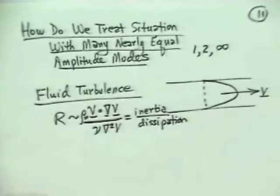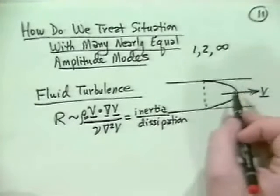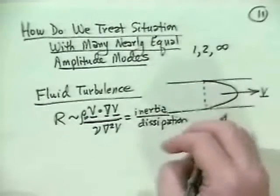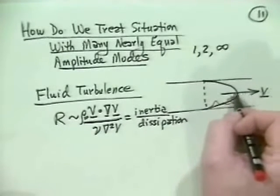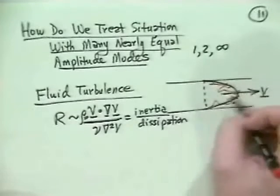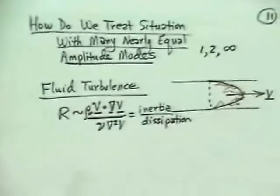Anyway, if this is very large, what we know happens is that we don't just get a nice, simple fluid flow profile, but it breaks up into all kinds of turbulent eddies, so you get turbulent flow down the pipe.